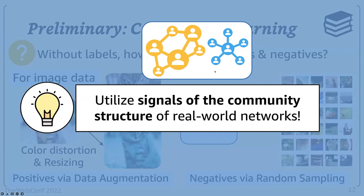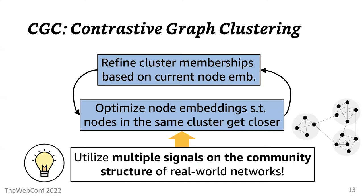Our main idea is to utilize the signals of the community structure of real-world networks, which have been discovered by earlier studies on networks. Our proposed framework, CGC, performs contrastive learning by carrying out these two steps in an alternating fashion. First, to refine the cluster memberships based on the current node embeddings and then optimize node embeddings such that nodes from the same cluster get closer to each other, while those from different clusters are pushed away from each other.